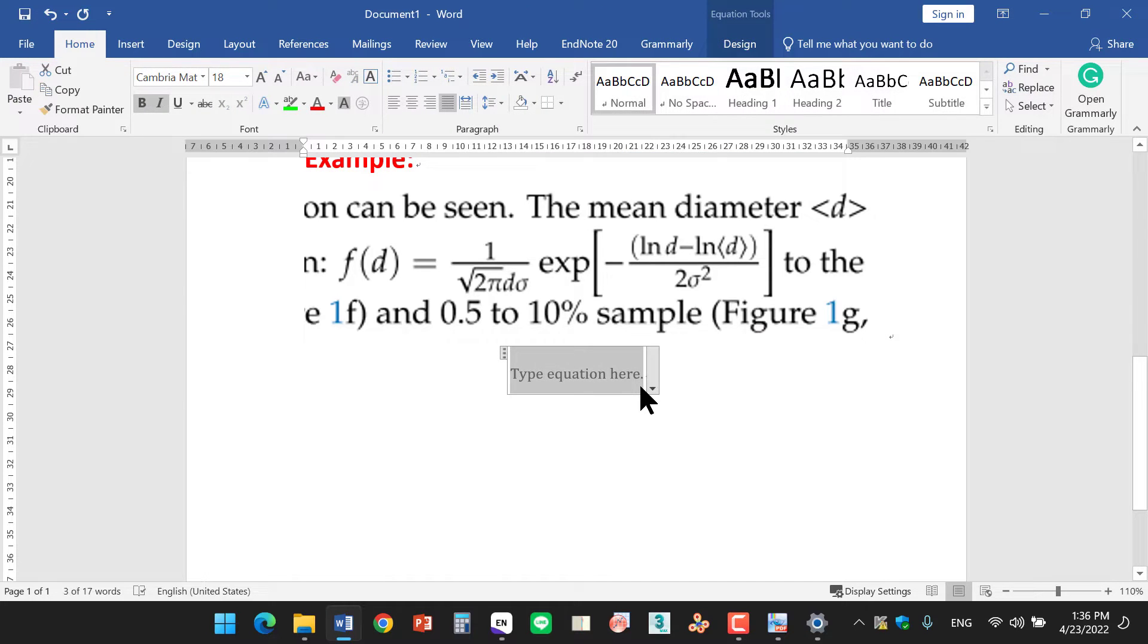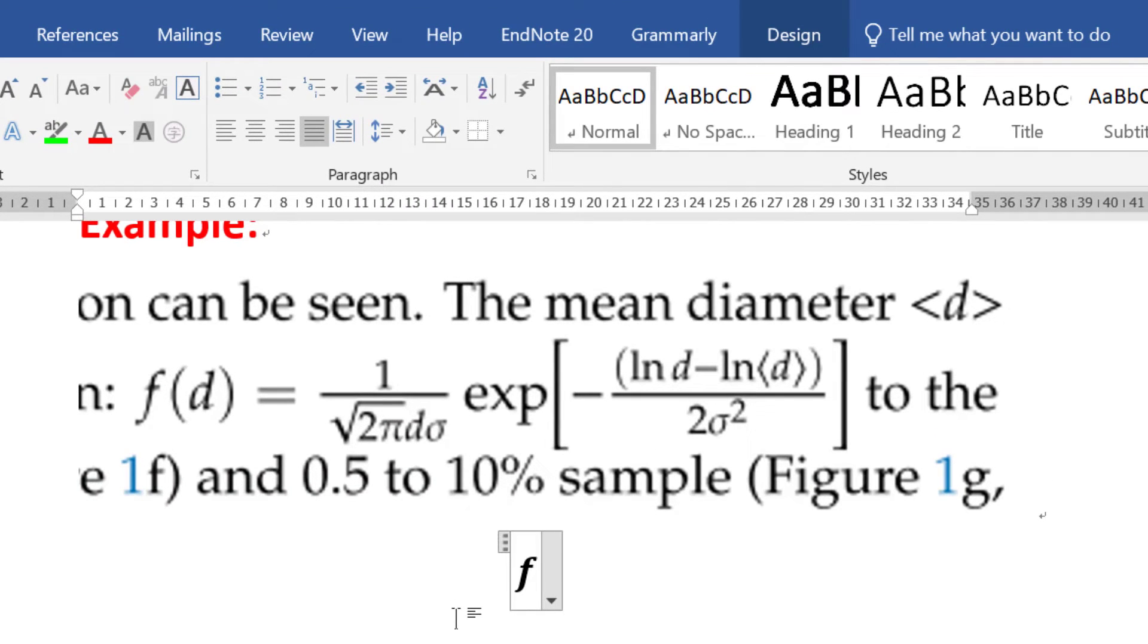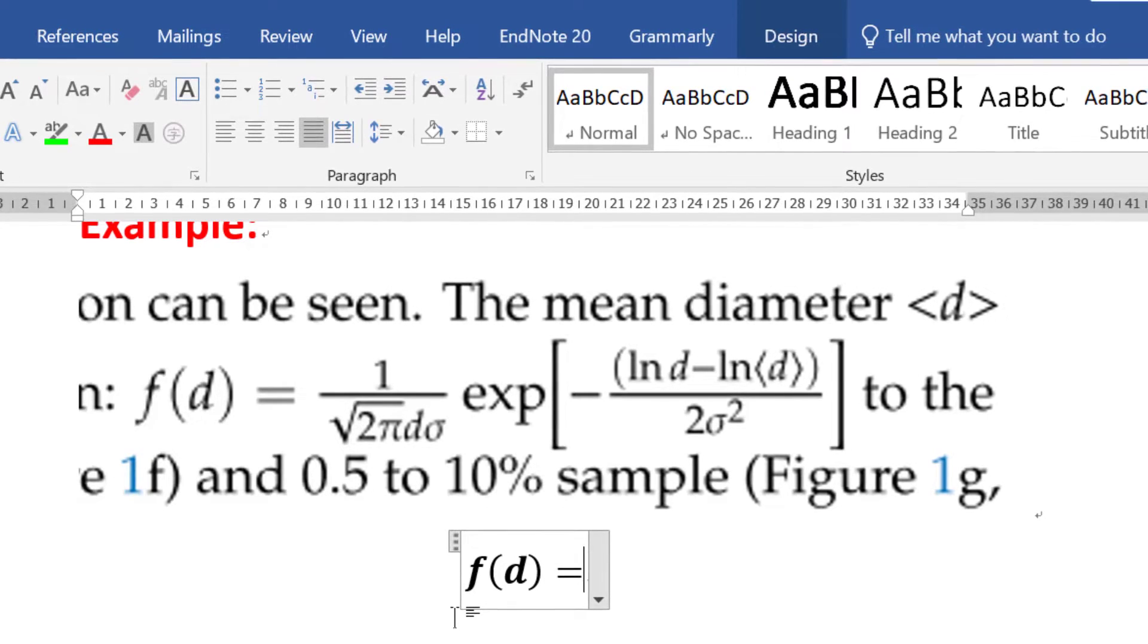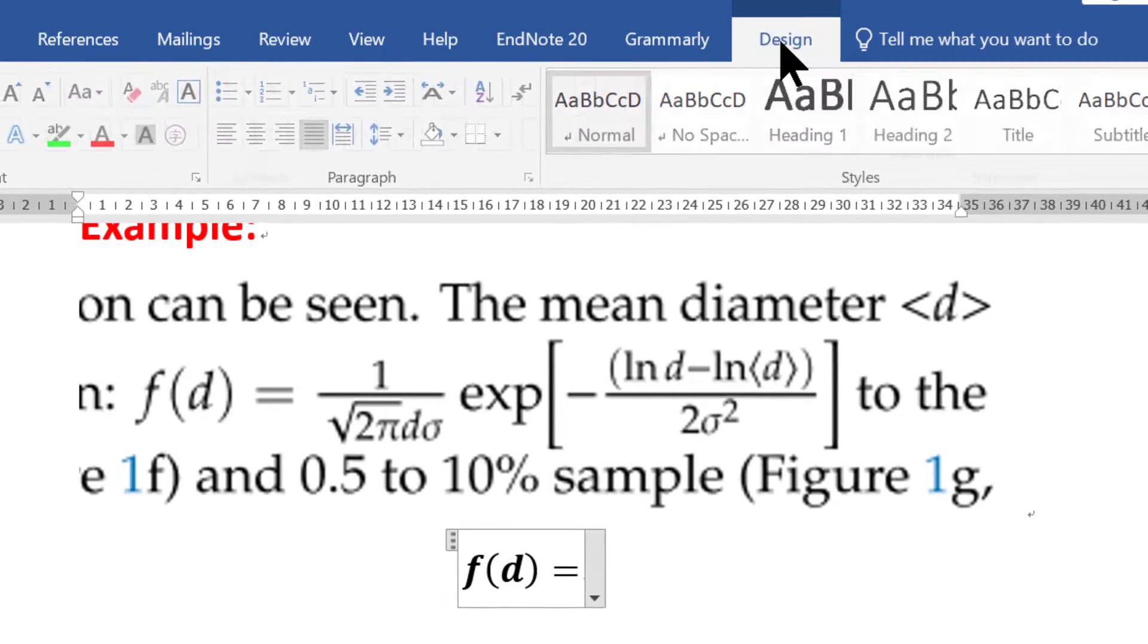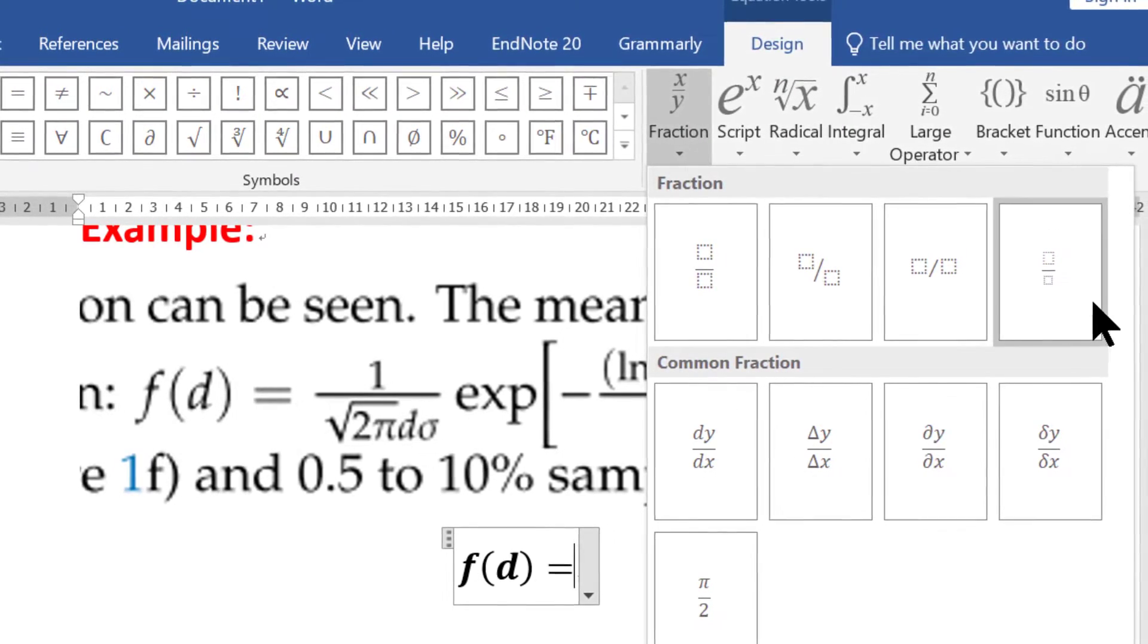For example, if you want to write this expression, type F in the bracket B which is equal to. Over here there is a fraction, so you can go back to the Design. In the Design, you can click on the Fraction. There are four different ways you can write a fraction.